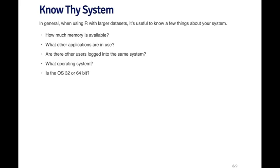In general, when you're using R with large datasets, and there's lots of large datasets out there nowadays, it's useful to have a few bits of information on hand. For example, how much memory does your computer have? How much physical RAM is there? These days, most computers will have on the order of a few gigabytes up to many gigabytes of physical RAM. What other applications are in use? Are there other applications that are running on your computer that may be eating up some processor time or memory?